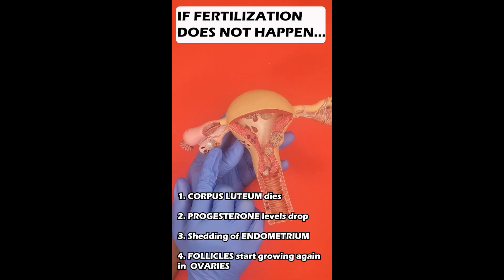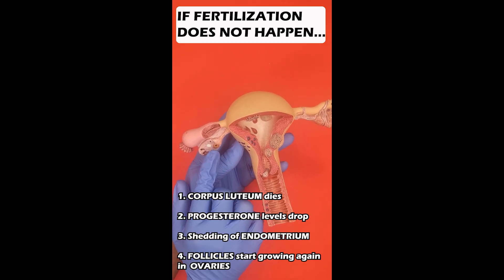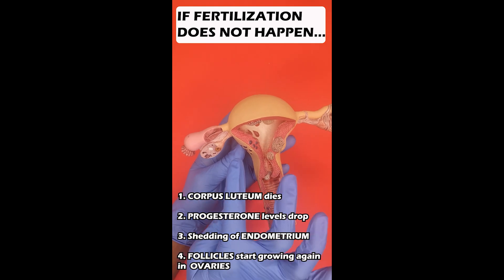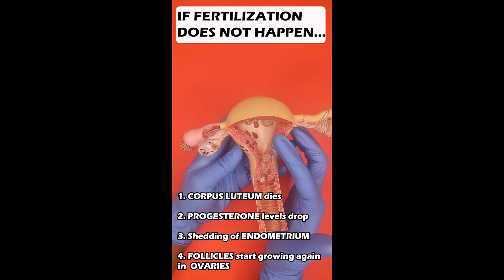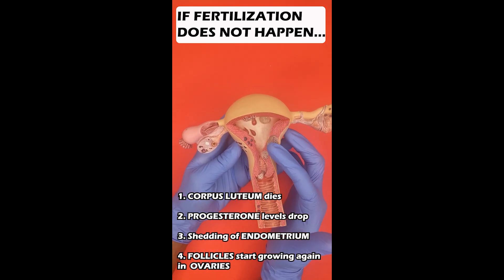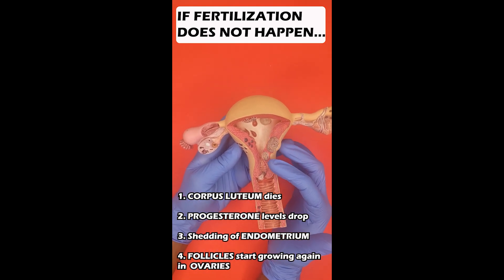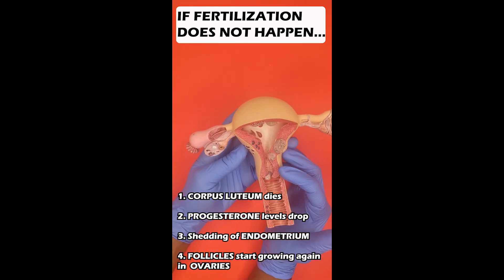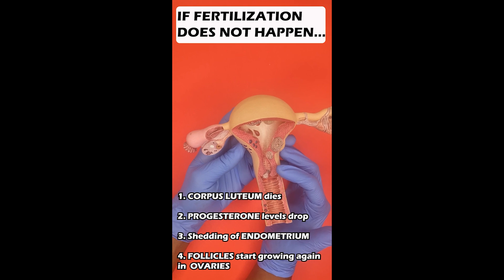If fertilization does not happen, the corpus luteum dies, the progesterone levels drop, and this leads to the cycle starting again with shedding of the endometrial lining, which is day one of the next period.